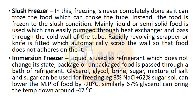In the slush freezer, a rapidly revolving scraper or knife is fitted which automatically scrapes the wall so that food does not adhere to it. In the immersion freezer, a liquid is used as refrigerant which does not change its state; packaged or unpackaged food is passed through a bath of refrigerant. Substances such as glycerol, glycol, brine, sugar, or a mixture of salt and sugar can be used. For example, 3% NaCl with 62% sugar solution can lower the melting point to -20°C, and 67% glycerol can bring the temperature down to around -47°C.